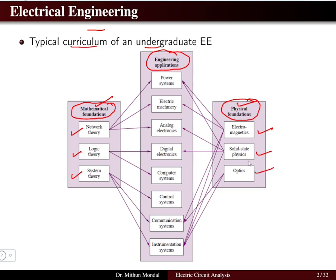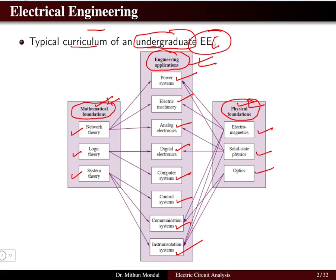Once we have understood the mathematical and physical foundations, they help us apply engineering knowledge. Different subjects — power systems, electrical machinery, analog electronics, digital electronics, computer systems, control systems, communication systems, and instrumentation systems — are the most important subjects covered for undergraduate EEE students. These subjects can be understood carefully only when the mathematical and physical foundations are strong.